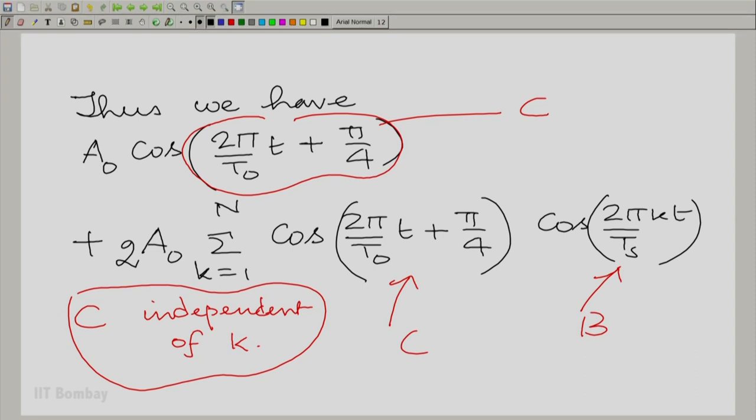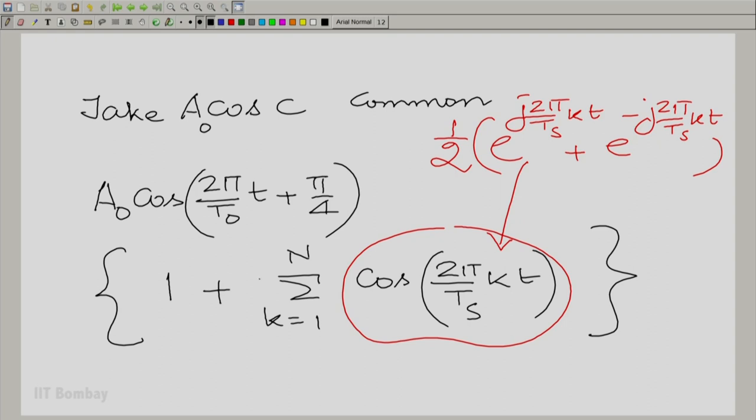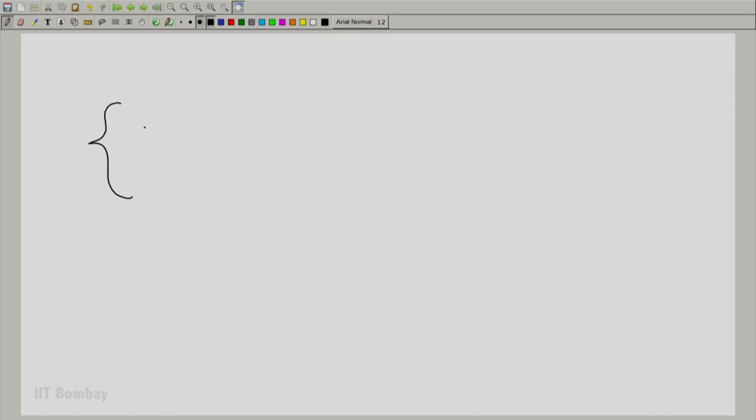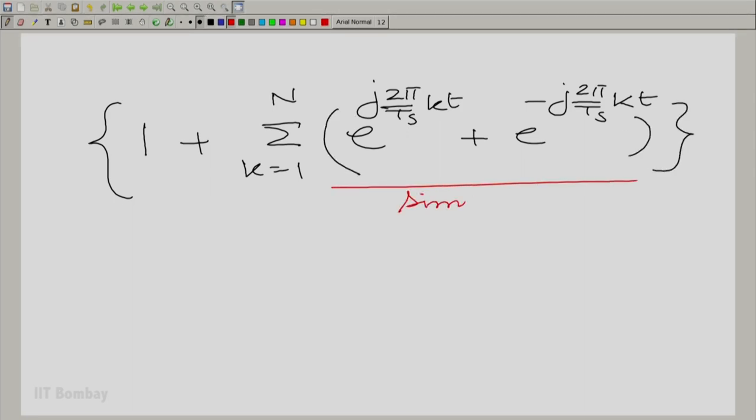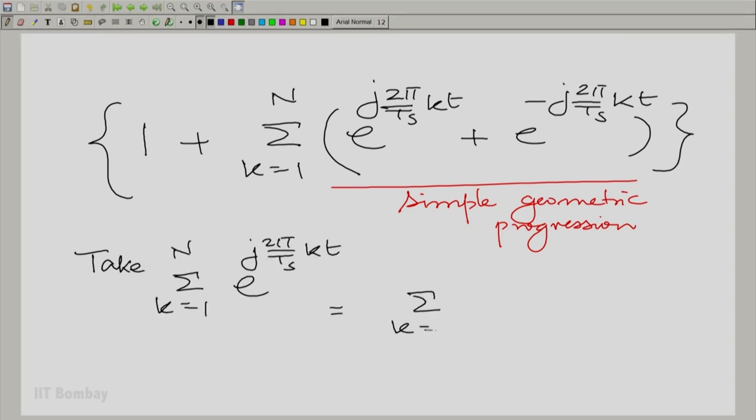So, if I bring the 2 here, the half would be removed. So, the summation in brackets now becomes 1 plus summation k going from 1 to n e^(j2π/t_s kt) plus e^(-j2π/t_s kt). Now, this is a very simple geometric progression. The only problem is of course, it has a common ratio of magnitude 1. So, you have to be a little careful. But, let us take any one of these terms. Now, this can be written as and now you can sum it as a geometric progression.